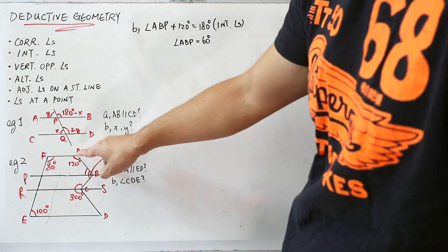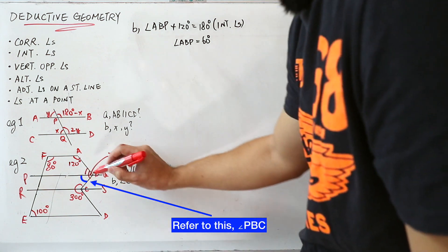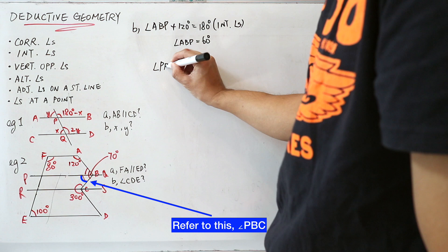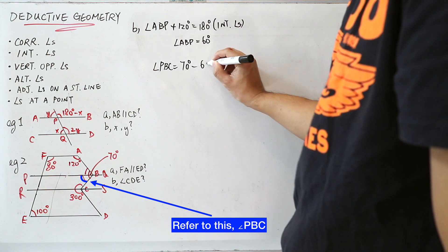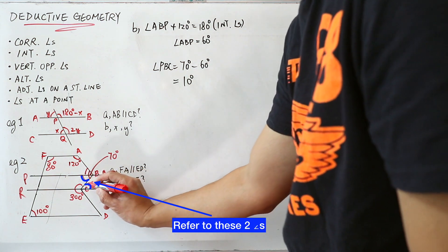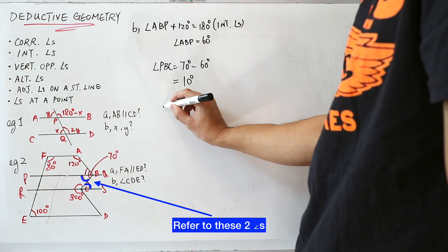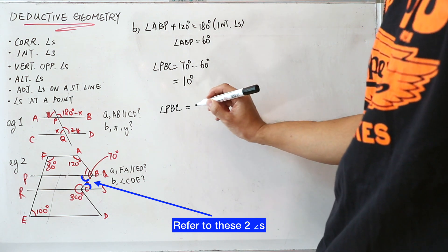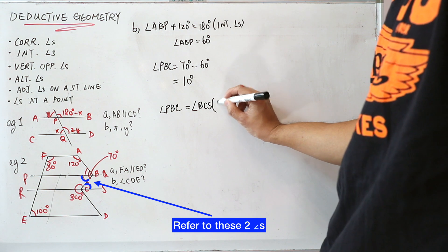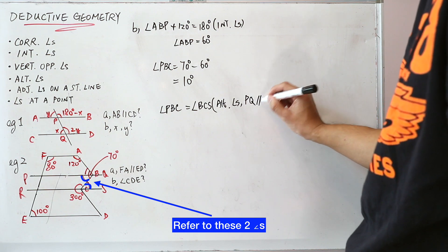Because the question tells us that angle ABC is 70 degrees, and we just found angle ABP is 60 degrees, angle PBC equals 70 minus 60 equals 10 degrees. So angle PBC equals angle BCS because they are alternate angles, PQ parallel to RS.